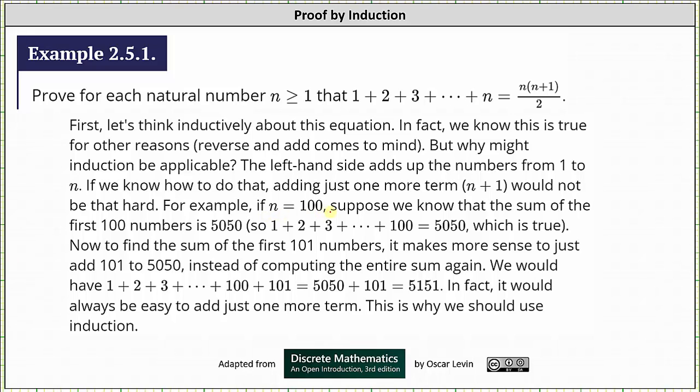For example, if n = 100, suppose you know that the sum of the first 100 numbers is 5050, meaning 1 + 2 + 3 + ... + 100 = 5050, which is true. Now to find the sum of the first 101 numbers, it makes more sense to just add 101 to 5050 instead of computing the entire sum again.